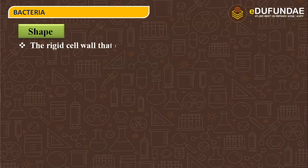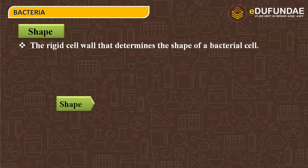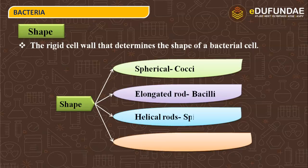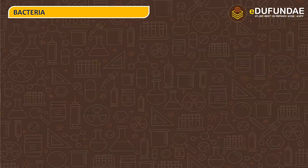Talking about the shape of bacteria, the rigid cell wall determines the shape of the bacterial cell. The shape can be spherical — called cocci; elongated or rod-like — called bacilli; helical rods — called spirilla; and comma-shaped — called vibrios. These are the categories of bacteria based on their shape.